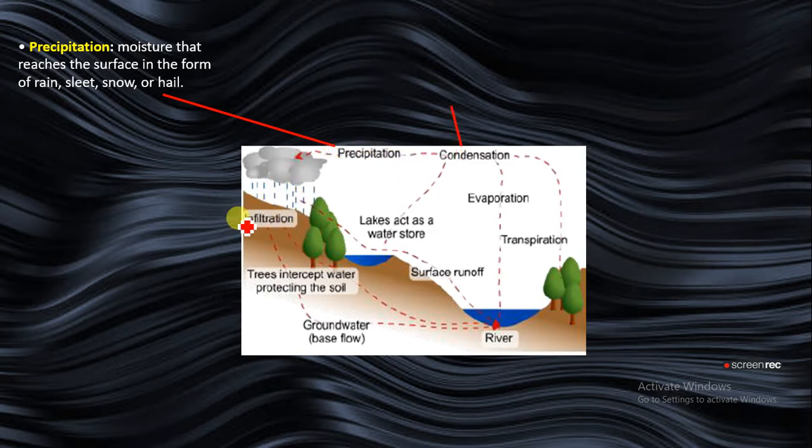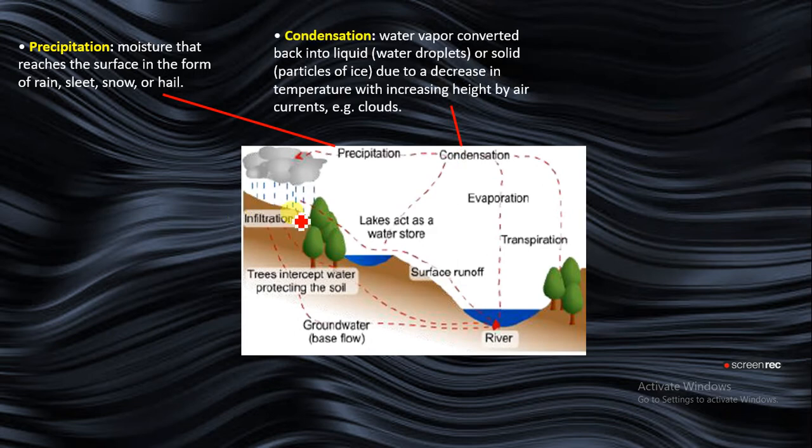Then you have condensation. Condensation is where water vapor is converted back into liquid water droplets or solid particles of ice due to the decrease in temperature with increasing height by air currents. As water evaporates into the atmosphere, the higher you go the colder it becomes, so it loses heat and begins to condense.